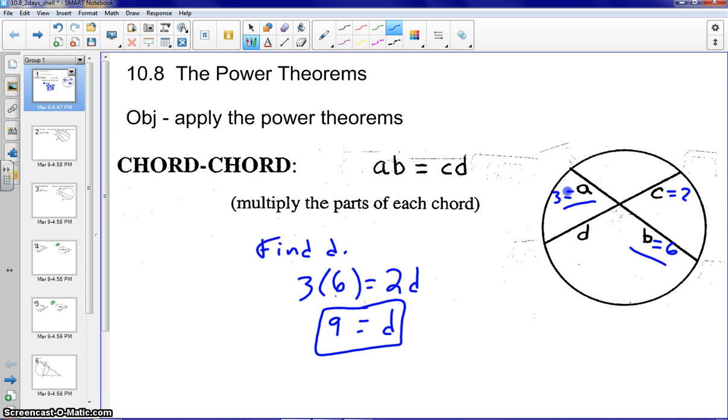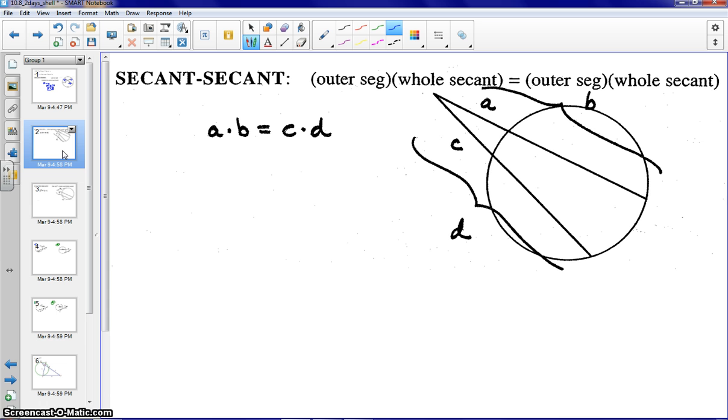Our next power theorem is a secant-secant. On this one, as you can see, A and C are the external parts of the two secants, while B and D are the entire or the whole secant. How we would solve this is we would take the external or the outer part, so we would take A times B, the outer times the whole secant, equals the outer times the whole.